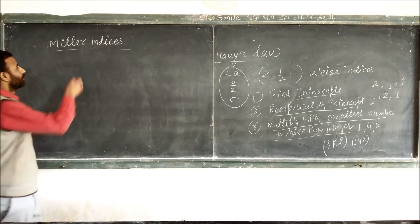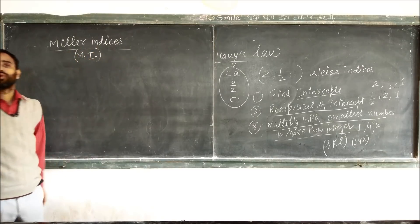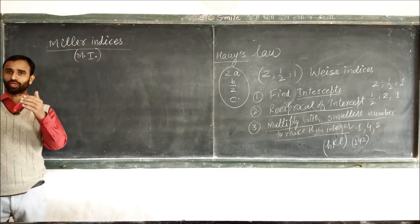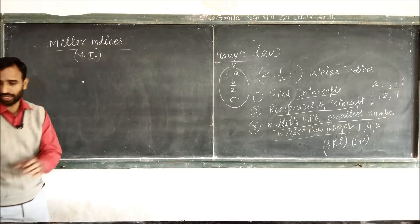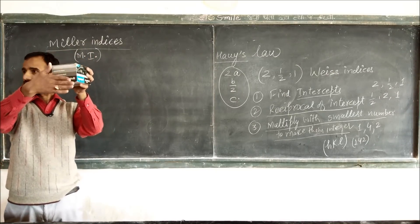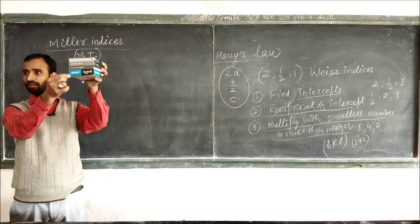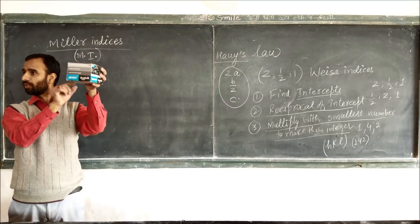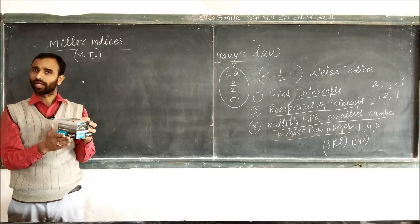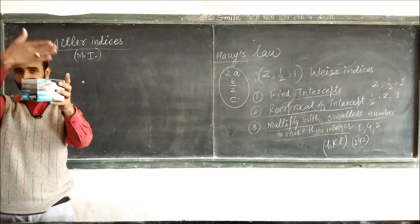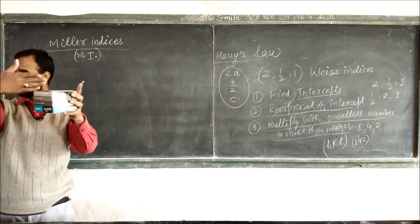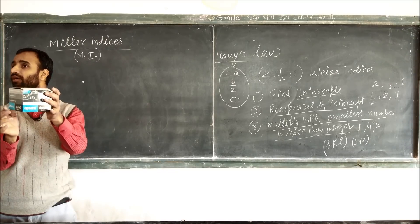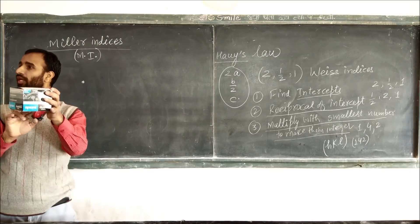For Miller indices calculation, the origin can never lie on a plane — we can say the origin cannot pass through the plane. Origin should be outside the plane; it cannot lie on the plane. For example, if we take a plane and cut it diagonally, the origin cannot be taken on any point of that plane.